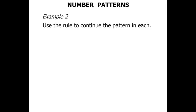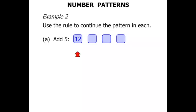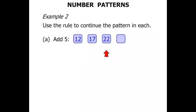Example 2: use the rule to continue the pattern in each. This time we've got a rule and a first number we're starting with. We're starting with 12 and the rule is to add 5. So 12 plus 5 is 17. From 17 we add 5, we get 22. We're at 22, now we need to add 5, and we get 27.